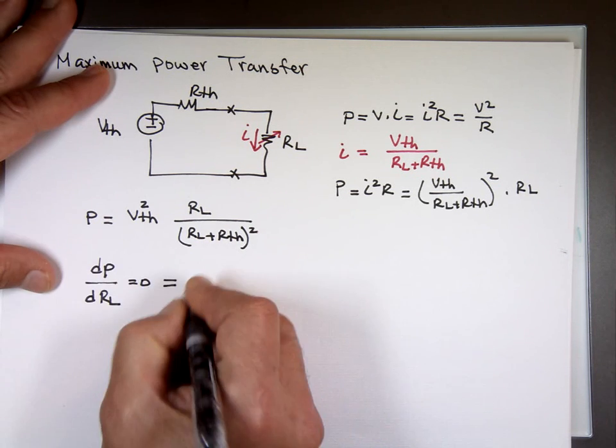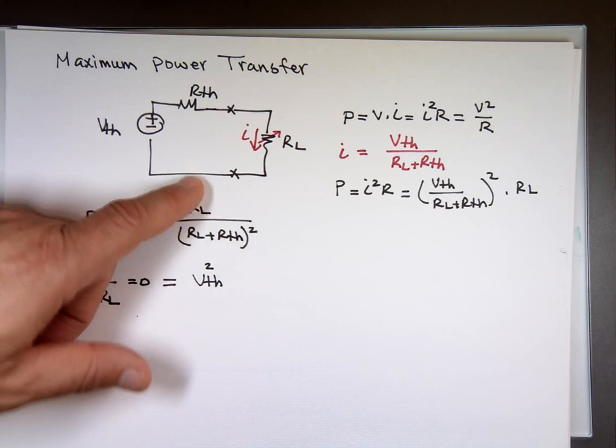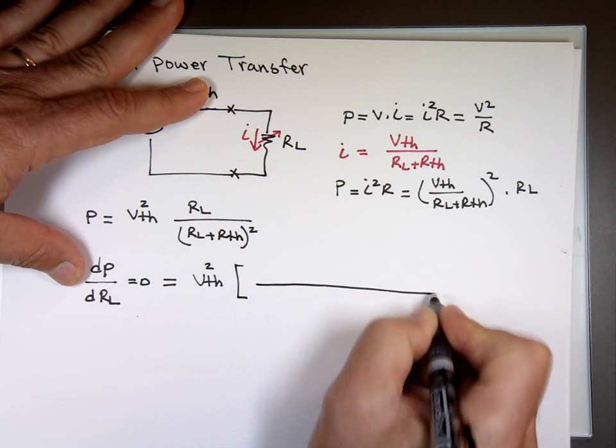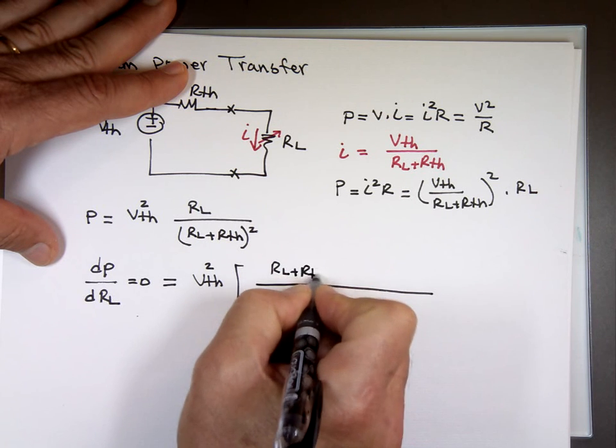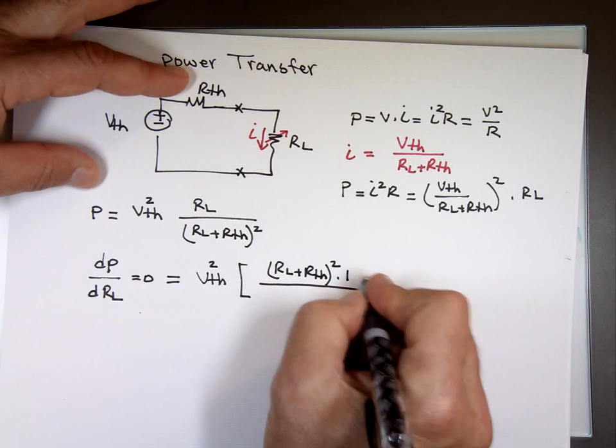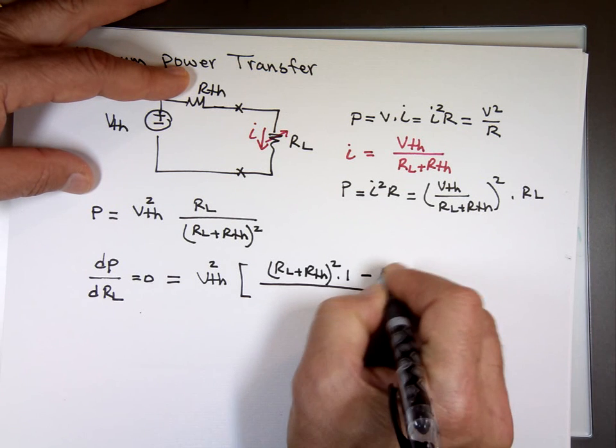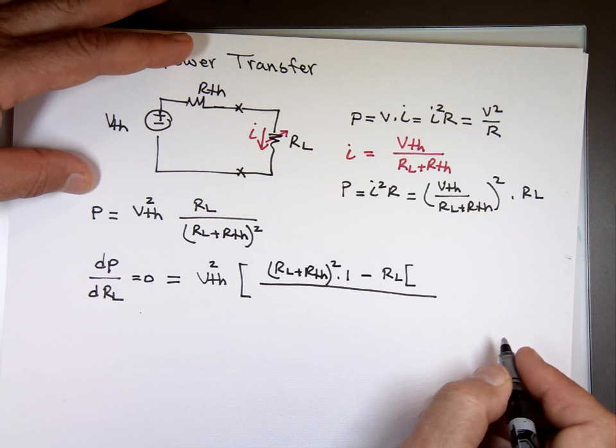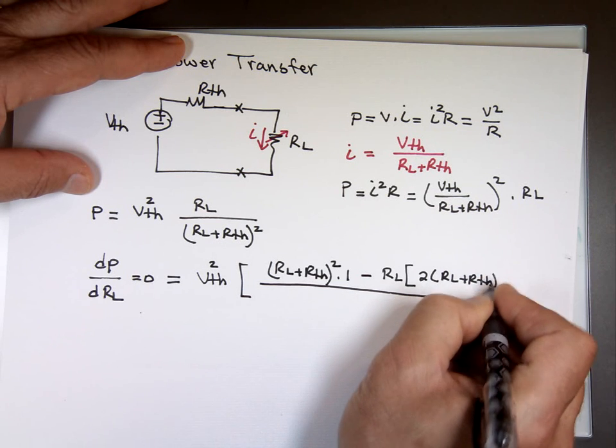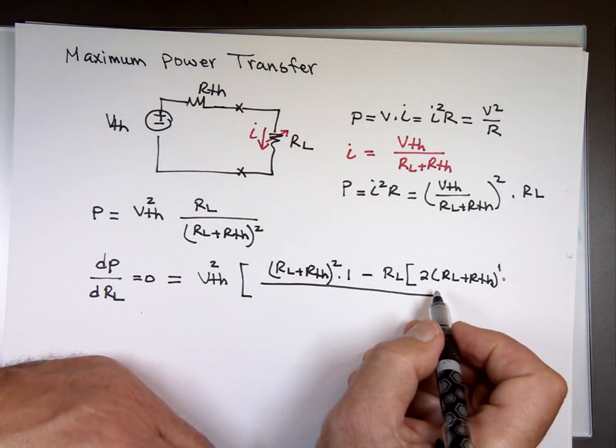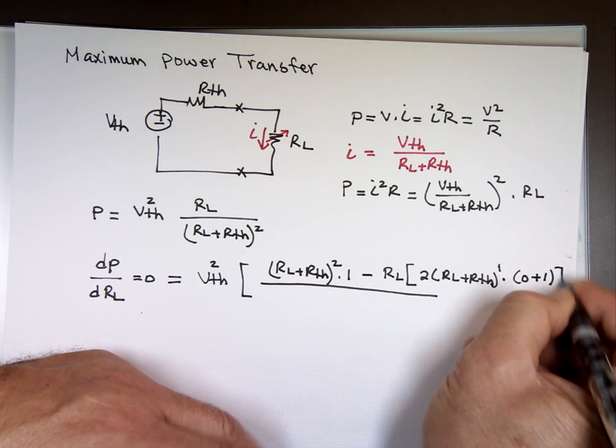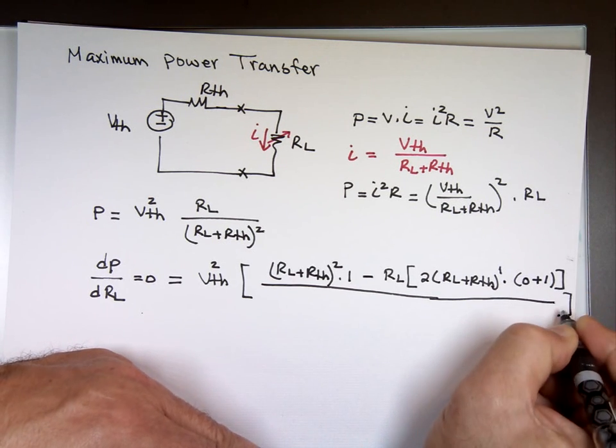How do you take the derivative of this? That's a fraction we use the quotient rule. The quotient rule says the bottom times the derivative of the top. And what's the derivative of R sub L with respect to R sub L? That's one. Minus the top times the derivative of the bottom. The top is R sub L, the derivative of the bottom. I have to use the power rule or the extended power rule. Two times R sub L plus R sub Thevenin to the power of one, times the derivative of what's inside of that. The derivative R sub L is zero, because that's a constant. The derivative of R sub Thevenin is one.